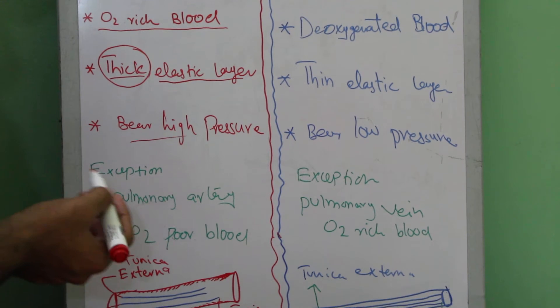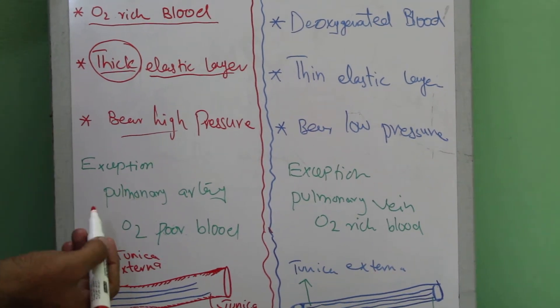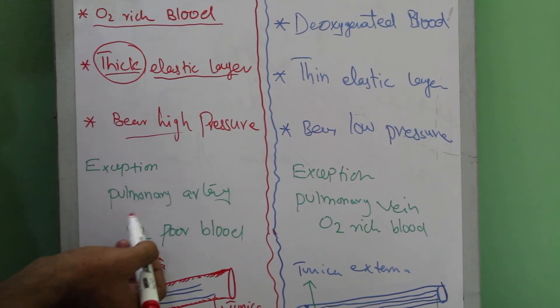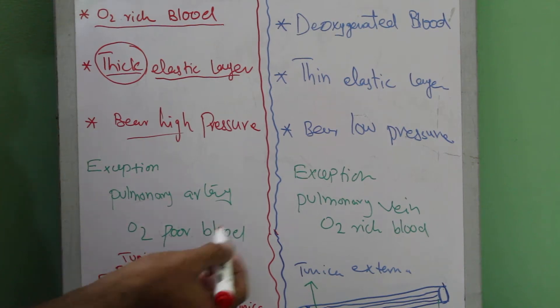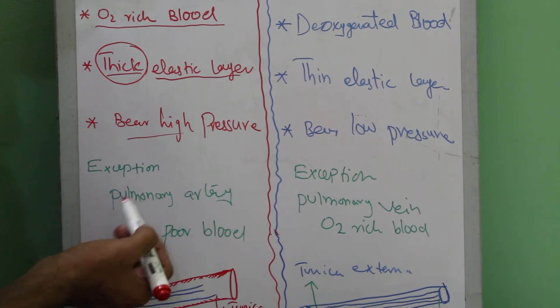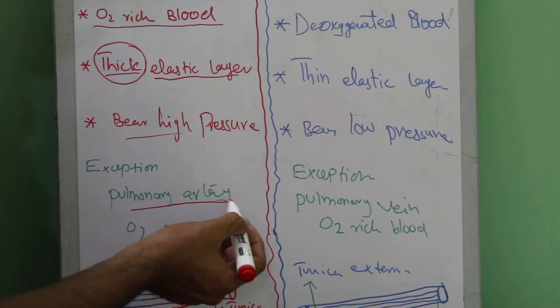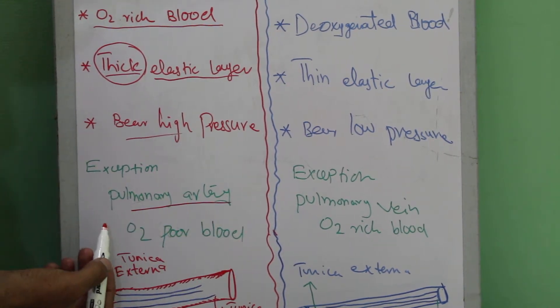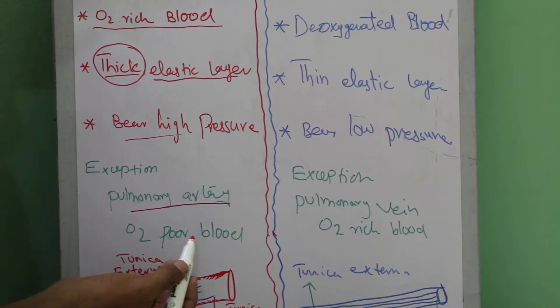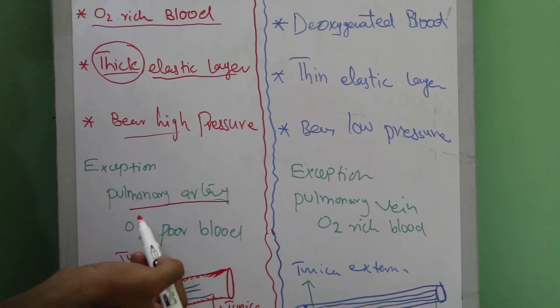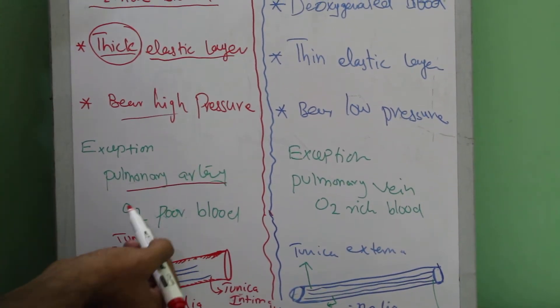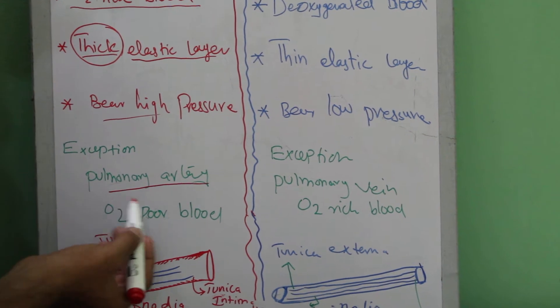But there is one exception as far as the oxygen concentration is concerned, and that exception is pulmonary artery. Pulmonary artery has poor oxygen. The reason relates to embryology - in embryology time when the baby is in the belly they have less oxygen.